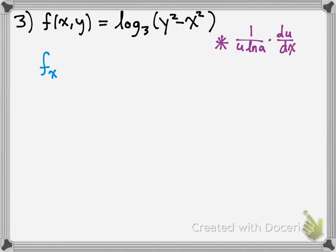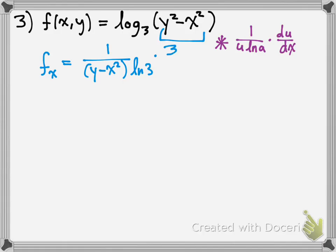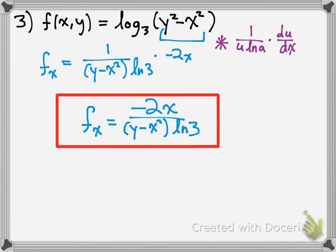The partial derivative with respect to x would be: 1 over u — that's 1 over y squared minus x squared — and ln of a, which is ln 3, times, using chain rule, what's on the inside. Since we're leaving y constant, the derivative of a constant goes to 0 and goes away. The derivative of negative x squared is negative 2x. To simplify, you get negative 2x over the quantity y squared minus x squared times ln 3. That's the partial derivative of f with respect to x.